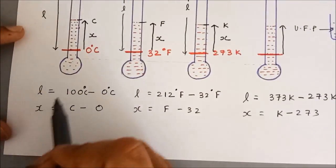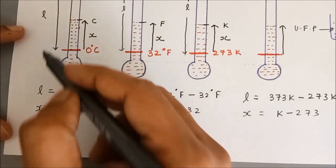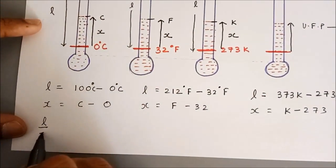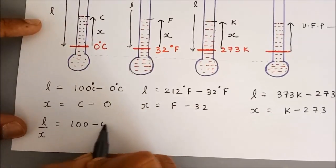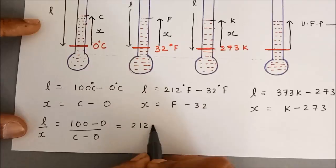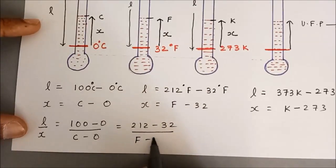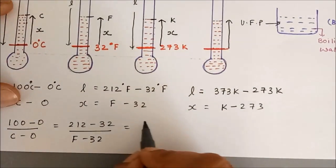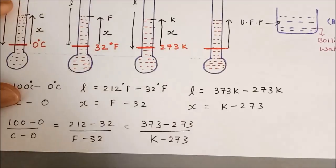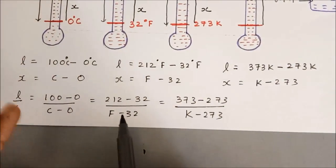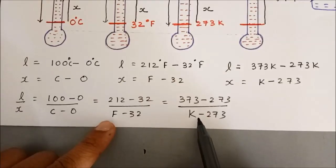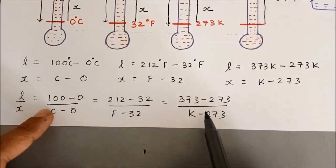L is the same in all 4 and x is the same in all 4, so if we find out the L/x ratio in all 4 cases, it will be the same. The L/x ratio for Celsius turns out to be (100 − 0) / (C − 0). That L/x ratio is the same as (212 − 32) / (F − 32) for Fahrenheit, and (373 − 273) / (K − 273) for Kelvin. So if you compare any two of these, you can convert between scales: equate the Celsius and Fahrenheit expressions to convert Fahrenheit into Celsius, equate the Fahrenheit and Kelvin expressions to convert Fahrenheit into Kelvin, and equate the Kelvin and Celsius expressions to convert Kelvin into Celsius.